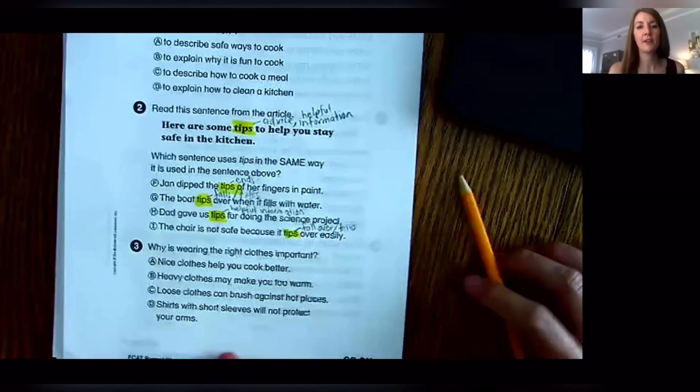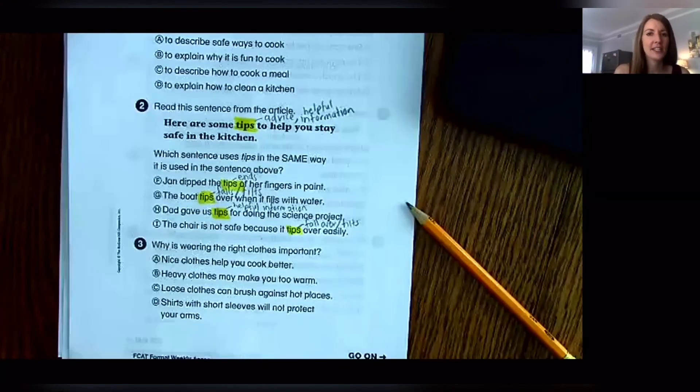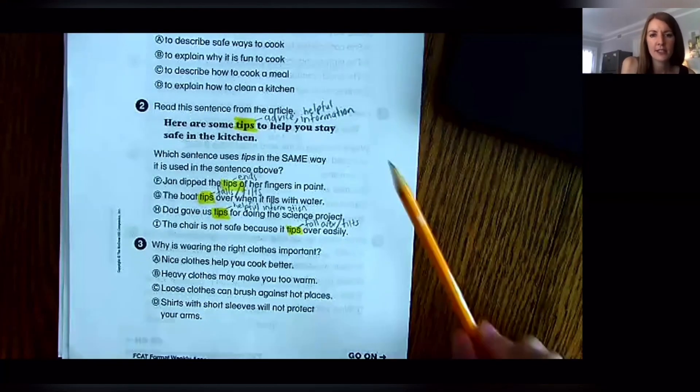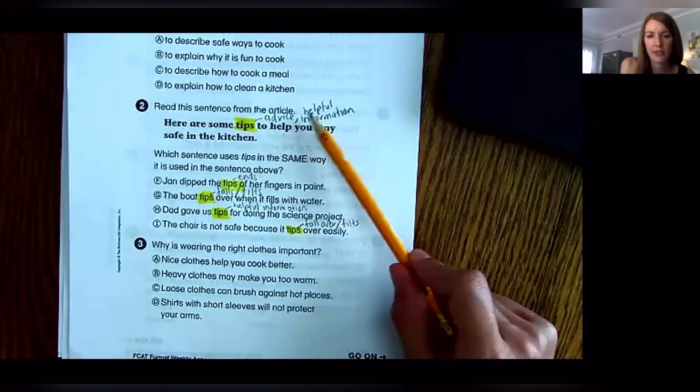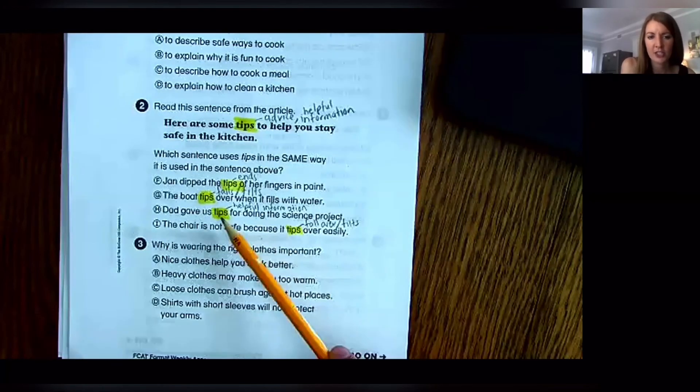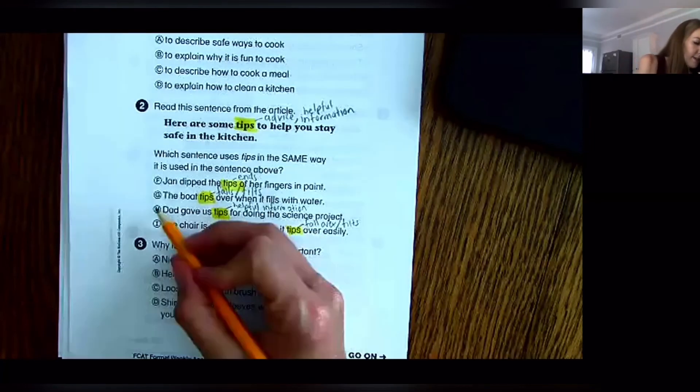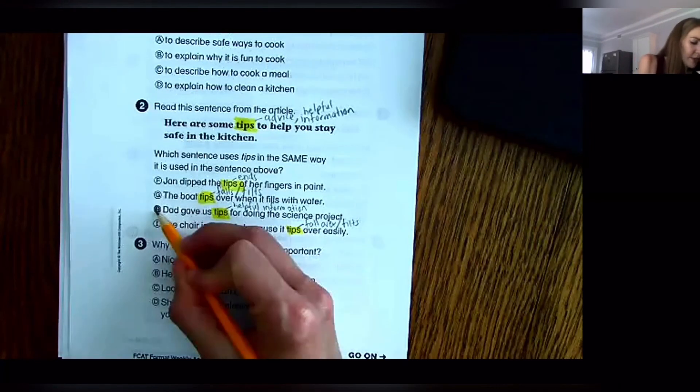So based on all of those, like I said it takes a little bit of work and you got to think through, but the only other sentence that used tip to mean advice or helpful information is H: Dad gave us tips for doing the science project. So that would be your answer for number two.